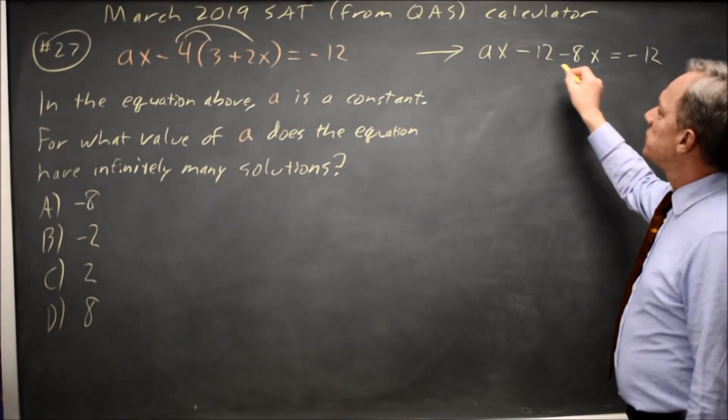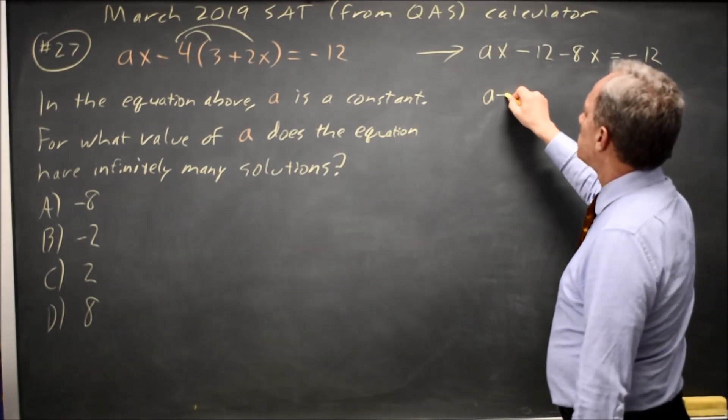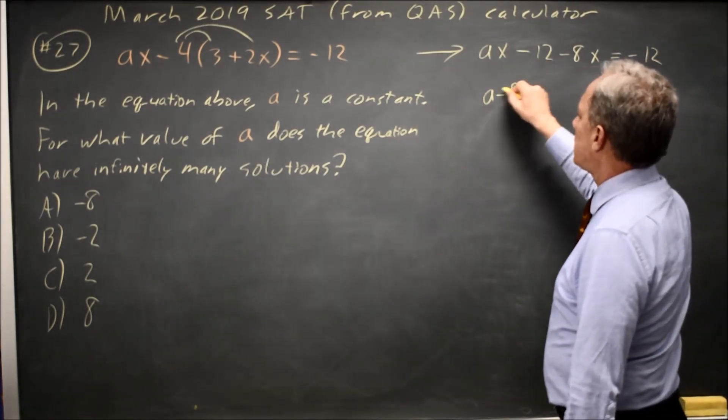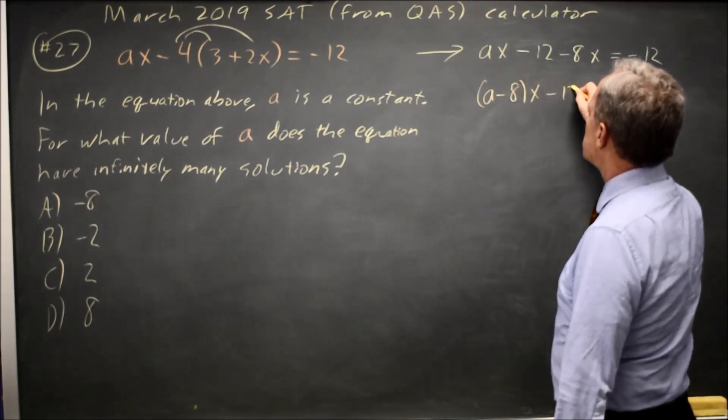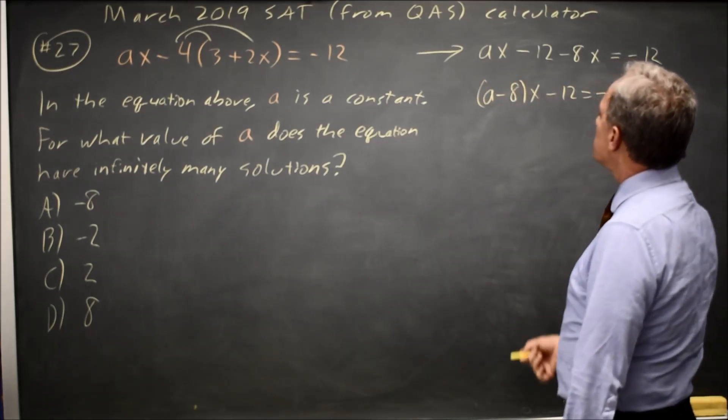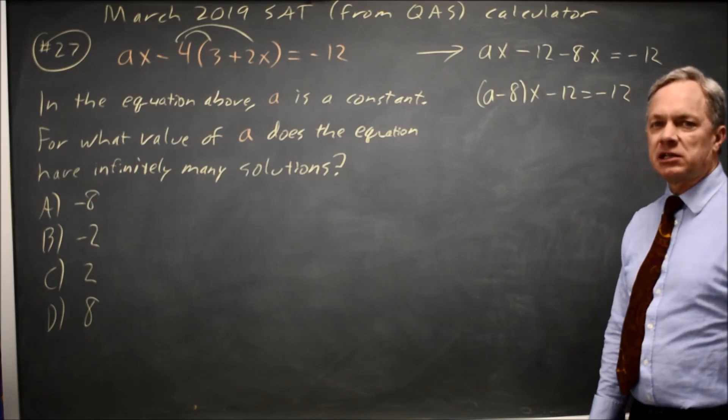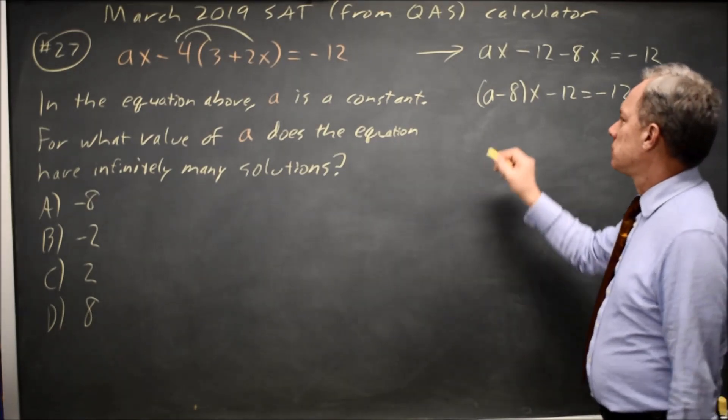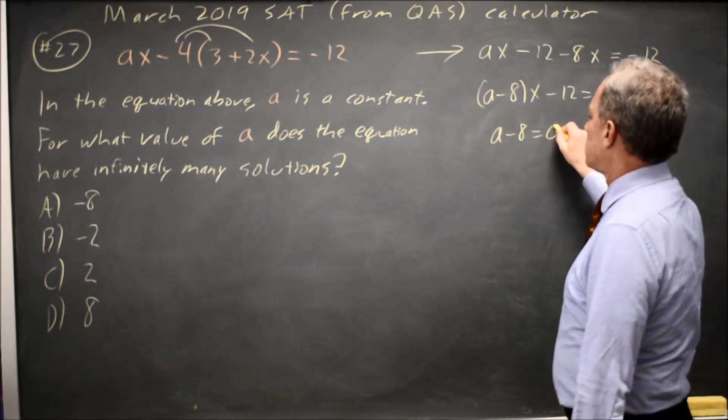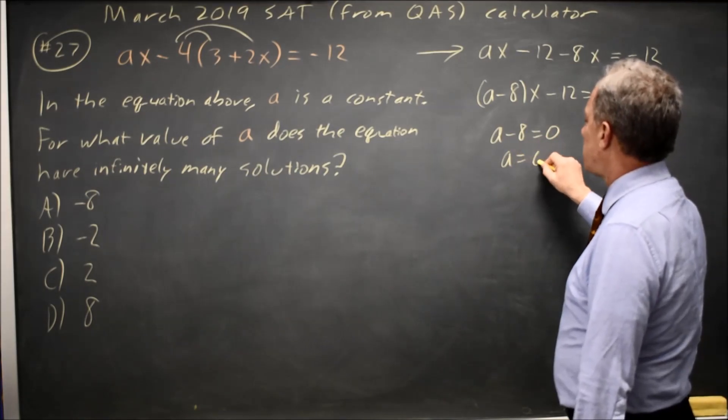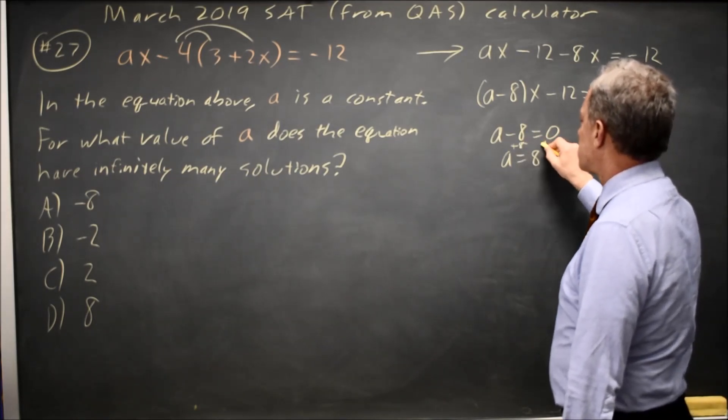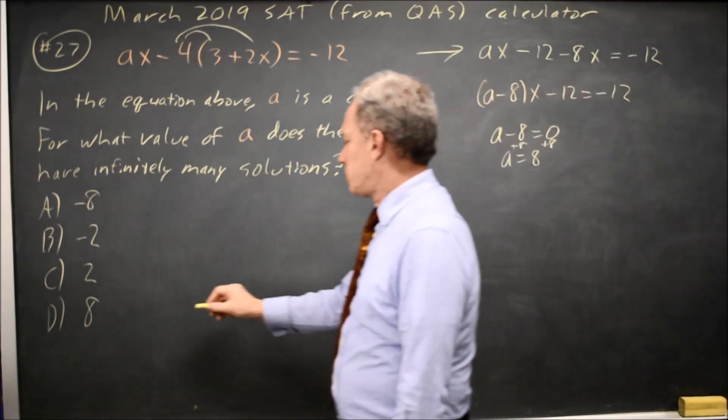Combining my two X terms, I have A minus 8X minus 12 equals negative 12, and that's true if A minus 8 equals 0, which means A equals positive 8 if I add 8 to both sides. So that would be choice D.